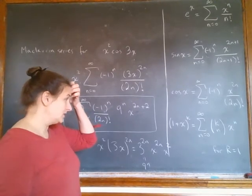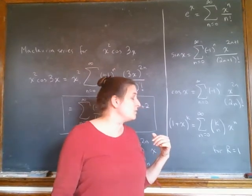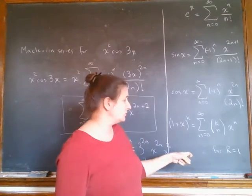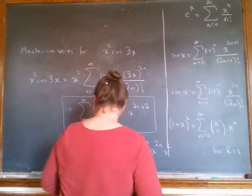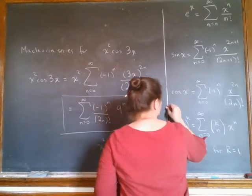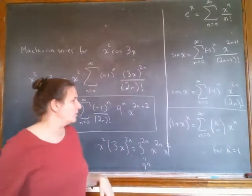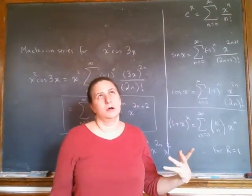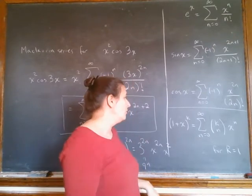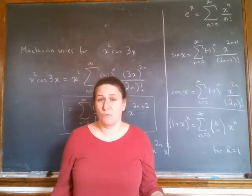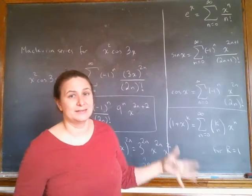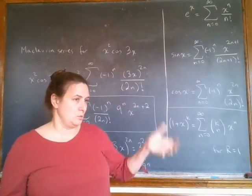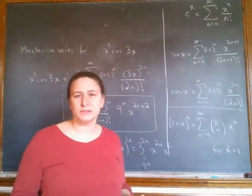One example, which is an important example that we didn't go through the derivation of, it is in your book, is this one down here. This is the binomial series. I'm sure you're familiar with the binomial series for k being some integer. 1 plus x to the 4th, right? You know you can pull that out. It's a finite polynomial. You can use Pascal's triangle, all that stuff.